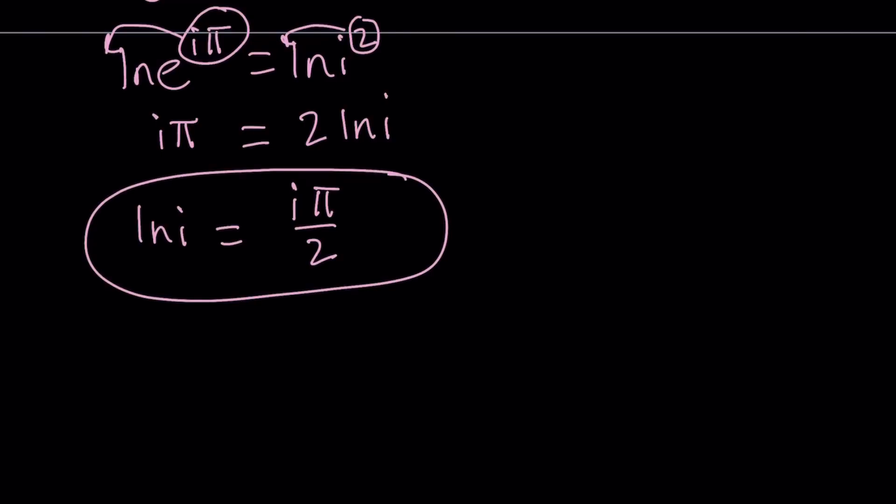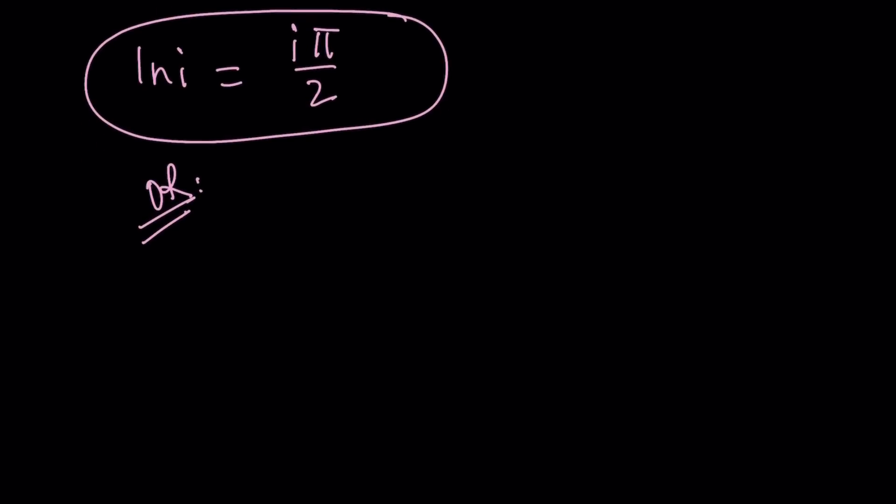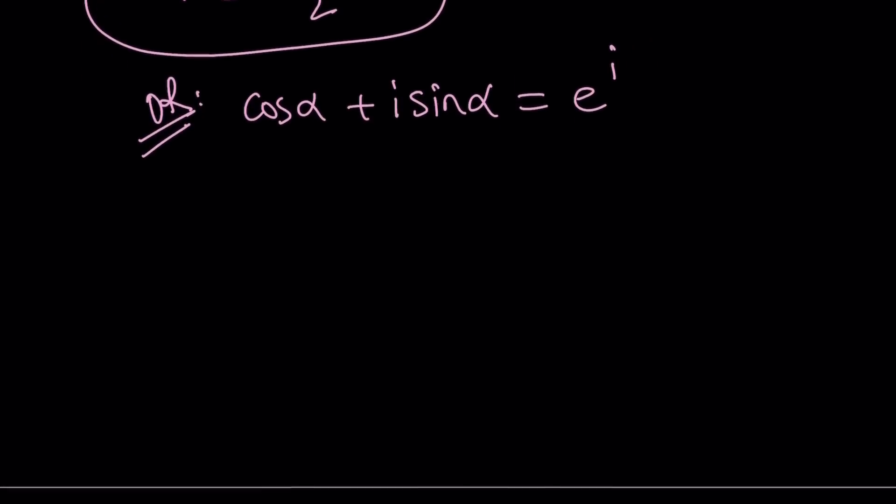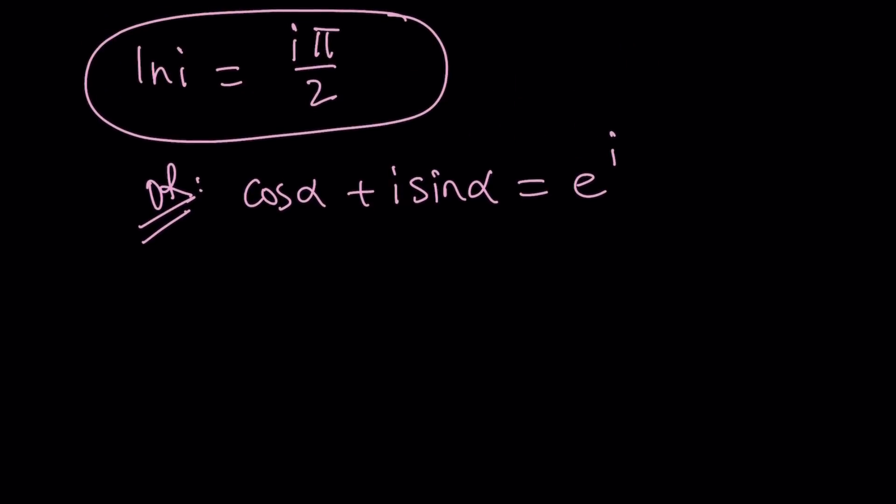So, we can also go ahead and do it a little differently to get to ln i. Remember, again, this is the original identity by Euler. Cosine alpha plus i sine alpha equals e to the power i alpha. Now, in this case, if you think about it, how could I write i in this form, which is also called the polar form?